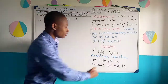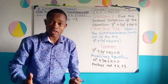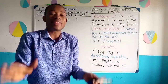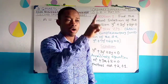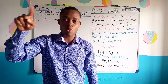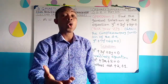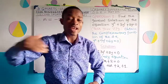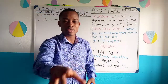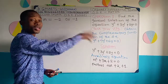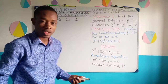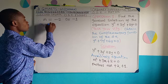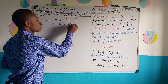The auxiliary equation was factorizable. The complementary function — the solution — would be either y = Ae^(n1·x) + Be^(n2·x), or y = (A + Bx)e^(nx), depending on whether the roots are equal or not. These roots are not equal, so m1 ≠ m2. We say m1 = -2 and m2 = -1.